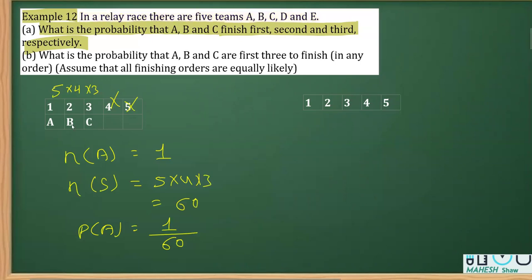For part (b), the question asks: What is the probability that A, B, and C are the first three to finish in any order? Again, we only focus on the first three positions, not the fourth and fifth.